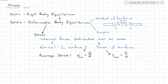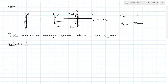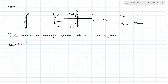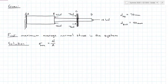Here we have a solid shaft with a 70 millimeter diameter from A to B, and a 40 millimeter diameter from B to D. There are five loads: a 4 kilonewton pair at B, a 7 kilonewton pair at C, and a 12 kilonewton axial force at D. We want to find the maximum average normal stress in the system. Since sigma-average equals N over A, we need the largest N and smallest area. The quickest approach is to draw an axial force diagram, so I'll start by solving for reactions at A.